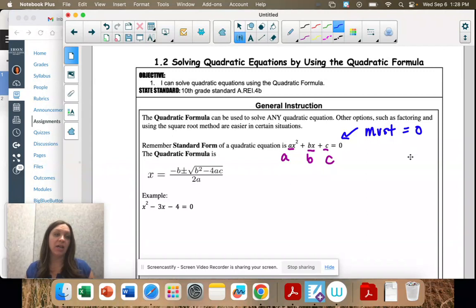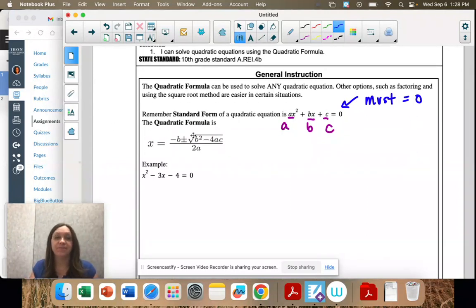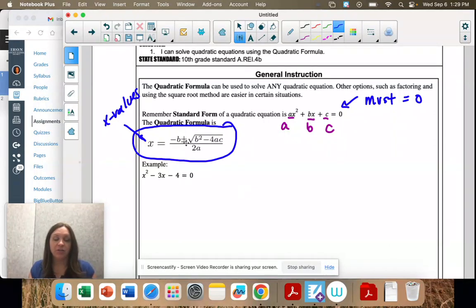Just like factoring, it had to equal zero. So this is it. X equals, those are x values that we're solving for. There's two of them. Negative b plus or minus square root b squared minus 4ac all over 2a. So we're plugging in these values, the a, b, and c, into this formula.